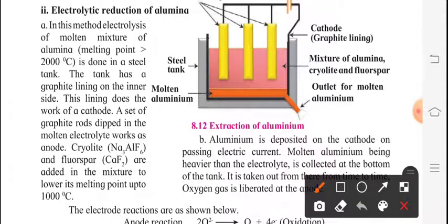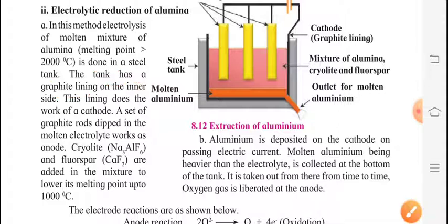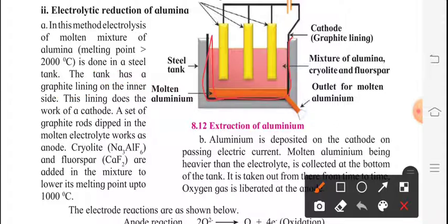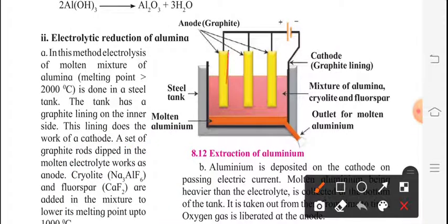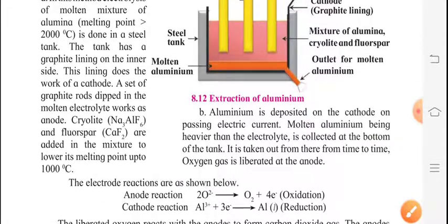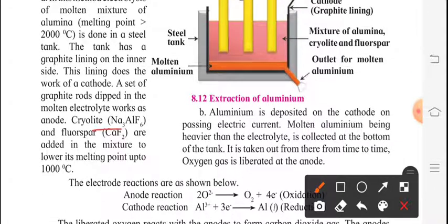In this method, electrolysis of molten mixture of alumina — whose melting point is greater than 2000 degrees Celsius — is done in a steel tank. The tank has a graphite lining on the inner side which works as the cathode. A set of graphite rods dipped in the molten electrolyte works as the anode. Cryolite Na3AlF6 and fluorspar CaF2 are added in the mixture to lower its melting point to around 1000 degrees Celsius.